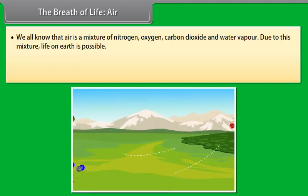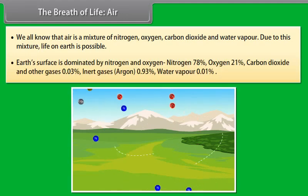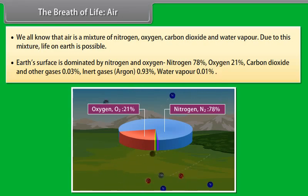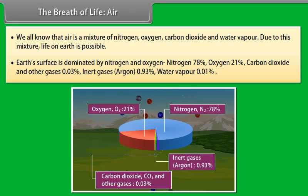The breath of life: air. We all know that air is a mixture of nitrogen, oxygen, carbon dioxide and water vapor. Due to this mixture, life on earth is possible. Earth's surface is dominated by nitrogen and oxygen. Nitrogen 78%, oxygen 21%, carbon dioxide and other gases 0.03%, inert gases argon 0.93%, water vapor 0.01%.